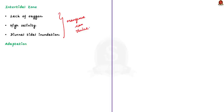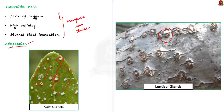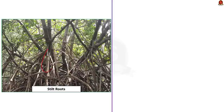The first adaptation is salt glands in the leaves, which help excrete excess salt from the plant. The second adaptation is specialized lenticel glands, located in the bark of the tree, which help in exchange of gases. These lenticel glands in mangroves are specialized to allow only gases and prevent the entry of salt.